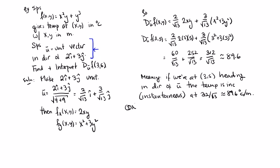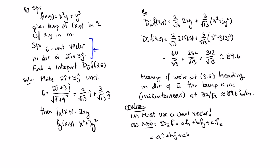So all I want to do now is close with two notes. Note A is that don't forget to make the vector a unit vector, otherwise you'll get the wrong result. And note B is, we can think of this as a dot product if we like. Notice that this is a f sub x plus b f sub y plus c f sub z. You can rewrite this if you like as the dot product between this vector, which is u, and a vector composed of these three.